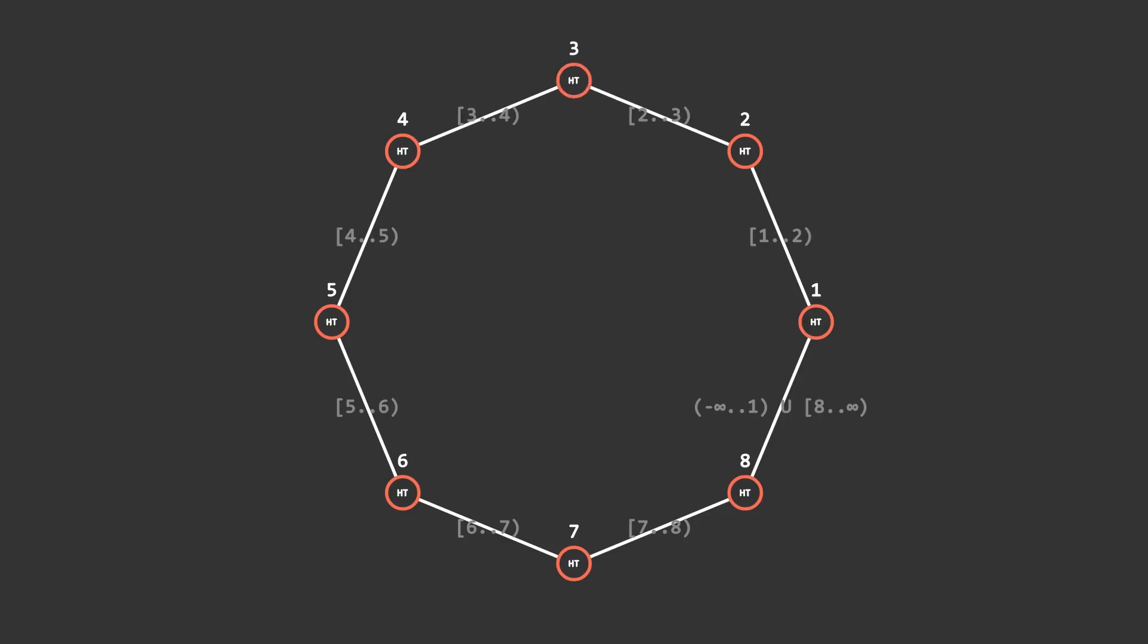Normally these nodes wouldn't have simple keys of 1 through 8. They would normally be hashed and evenly distributed over the range. Additionally, node 1 wouldn't be bounded by infinity on either end. Instead, it would likely be from 0 to 1 and 8 to the maximum key value. In this case, these values were just used for simplicity's sake. And that's DHTs in a nutshell.